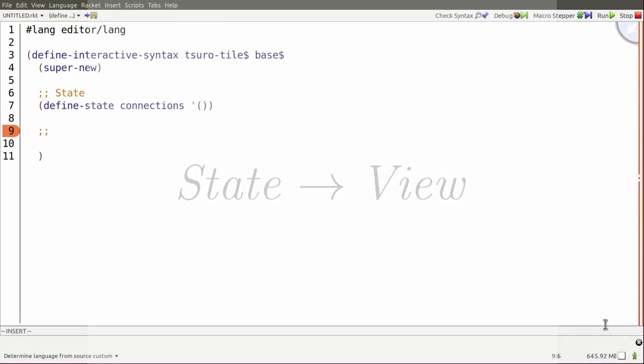Second, there must be some mechanism for rendering the state to the programmer. This rendering determines how an editor gets drawn to the screen.